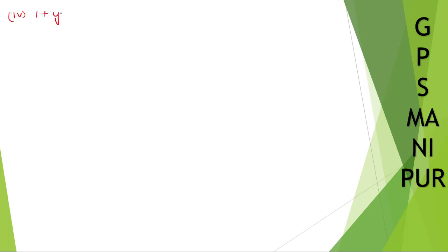1 plus y cube plus 3y minus 1 minus 4y cube plus y to the power 5 plus y square plus 3y. Seems long but don't worry.